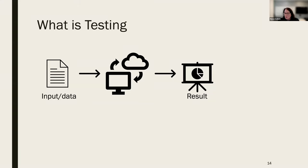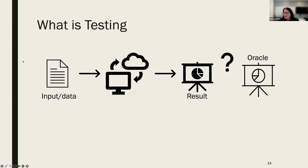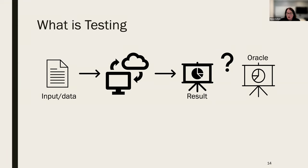Once we get the result, we need to determine whether or not that result is correct. We have this notion of what we call the oracle — the correct answer. This is basically asking: once we have the result, does it match our expectation? That's at a very simple level what testing is. In testing, we don't just run one test — we run sets of test cases, what we call a test suite. Coming up with sufficient test suites and good coverage across these test suites are some of the challenges we face.